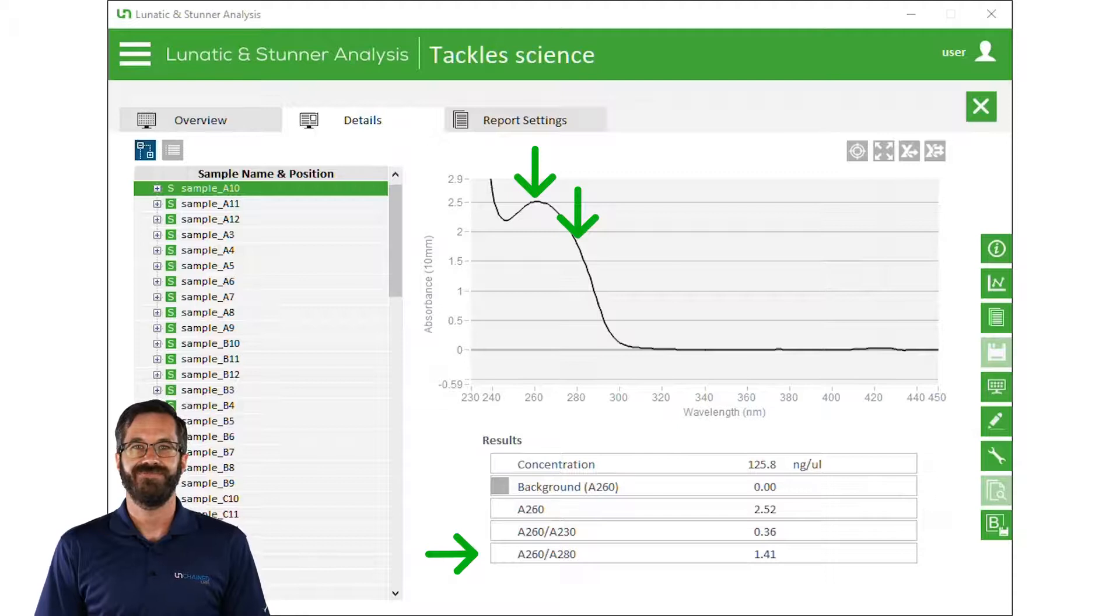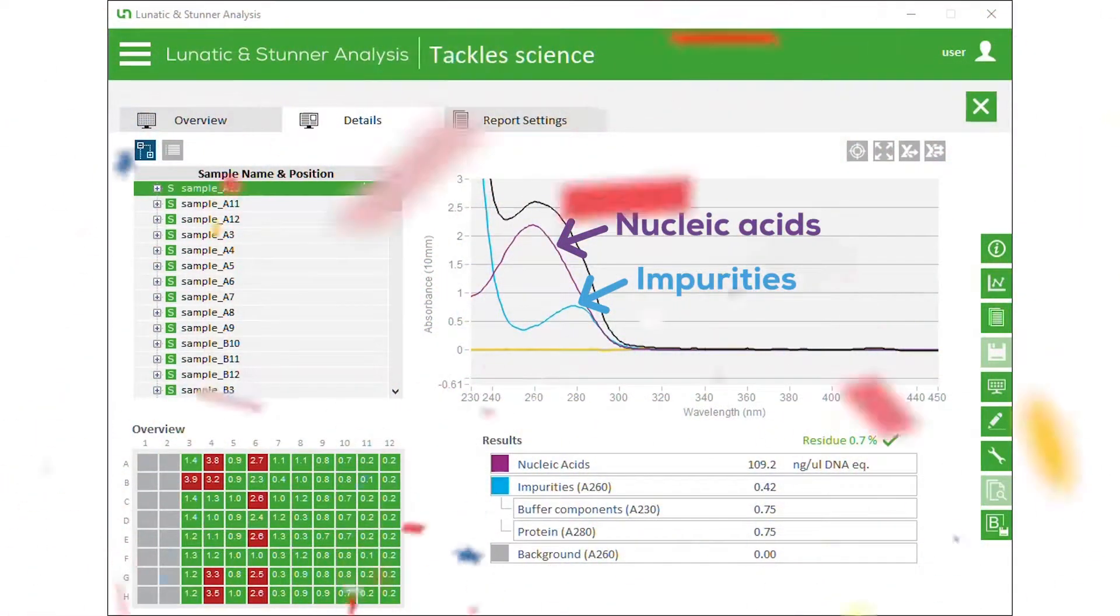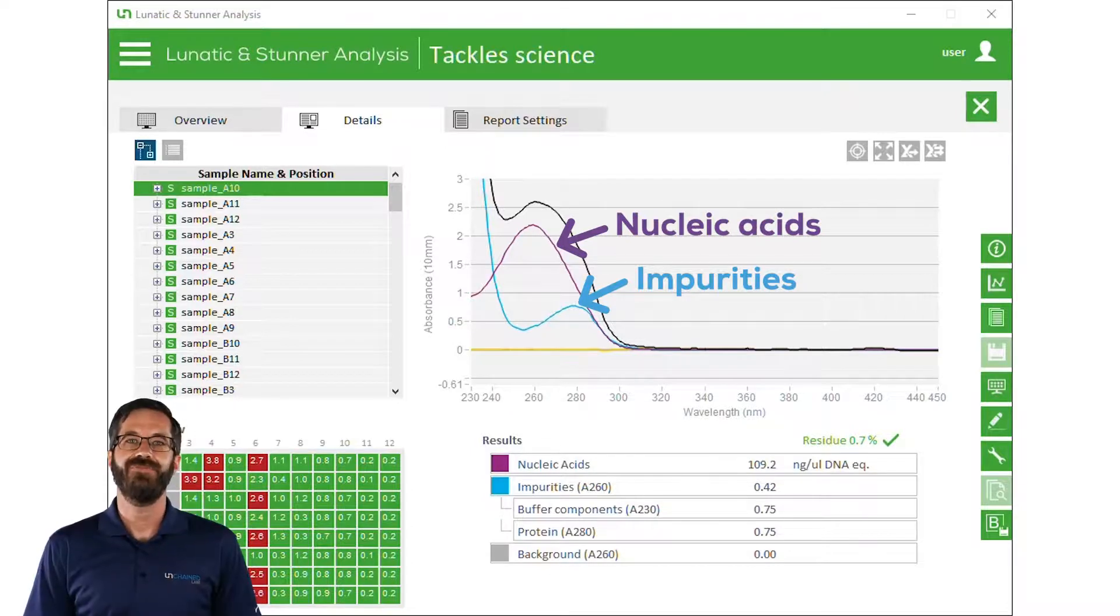But Lunatic has a smarter way. Lunatic comes packed with lots of unmixed applications that let you see the absorbance from impurities that other UV-Vis systems would mistake as DNA or RNA. That helps you understand if that reading is coming from common components like proteins, EDTA, phenol, or more, all depending on the workflow that your sample came from.